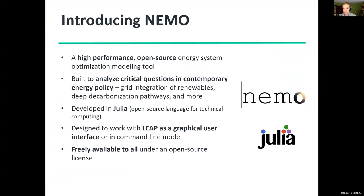I'd like to introduce a new open source energy system modeling tool called NEMO, which stands for the Next Energy Modeling Tool for Optimization. This is a high-performance tool built to analyze critical questions in contemporary energy policy, such as the grid integration of variable renewable energy, deep decarbonization pathways, and how to manage energy systems in view of climate change. We developed this tool in a language called Julia, a new open source language for high-performance technical computing, chosen for its growing community and performance characteristics.